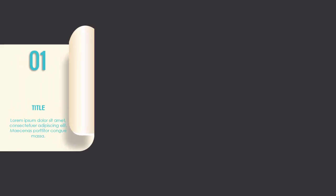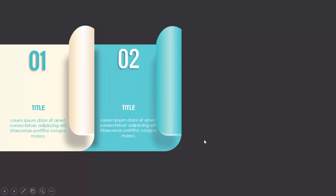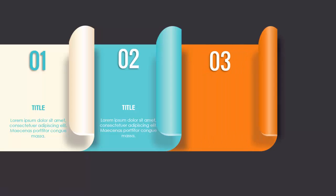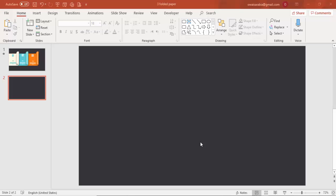In this tutorial I am going to show you a very useful three options infographic slide in PowerPoint. When I click it will show the first option with a folded paper design, and when I click again it will show the second option with a different color, and then the third option with some orange color.